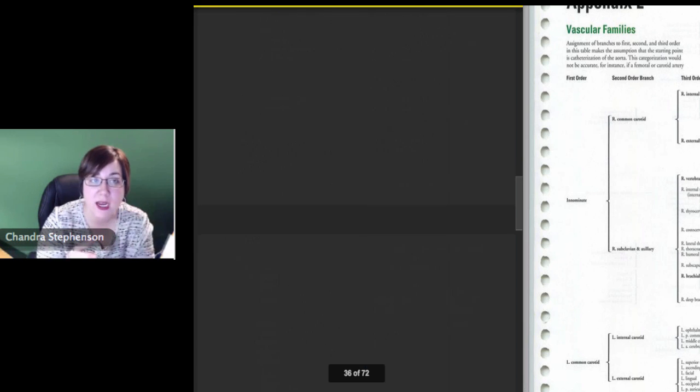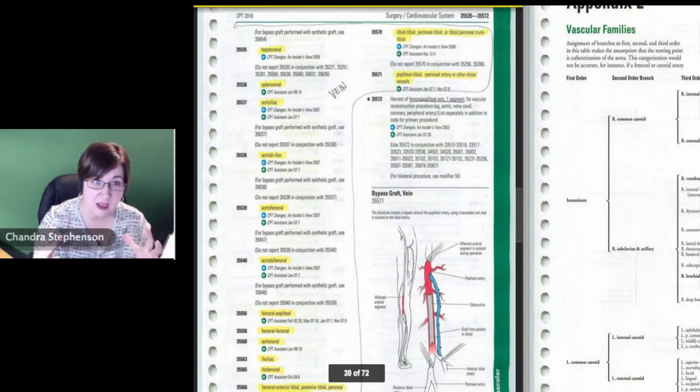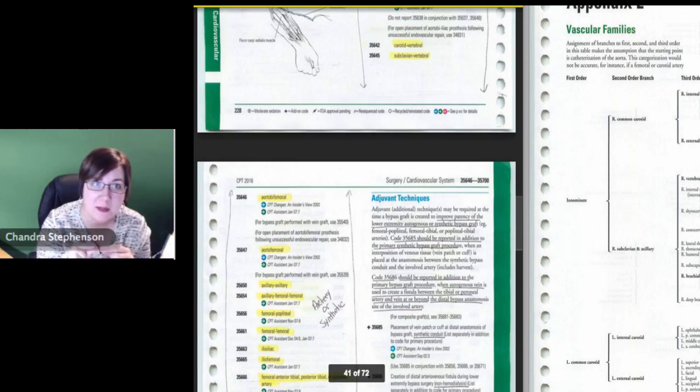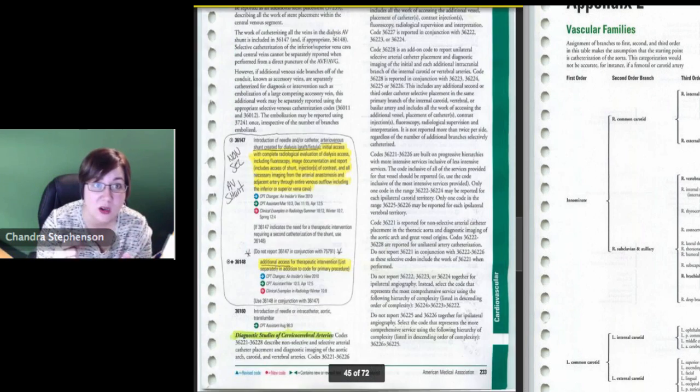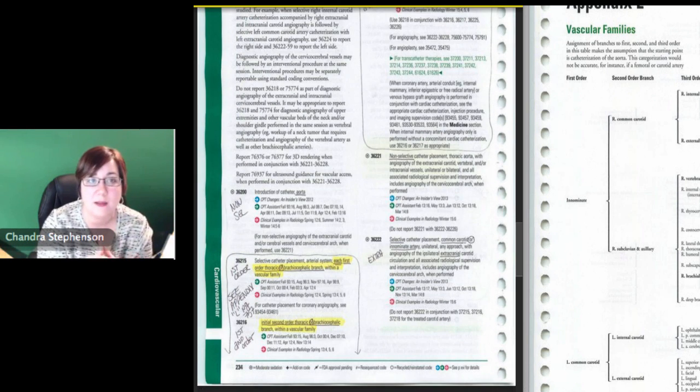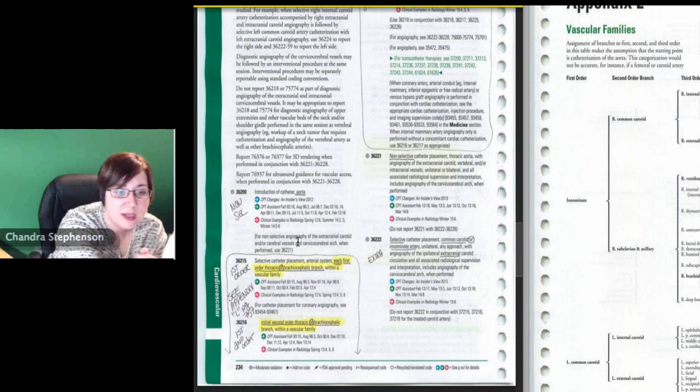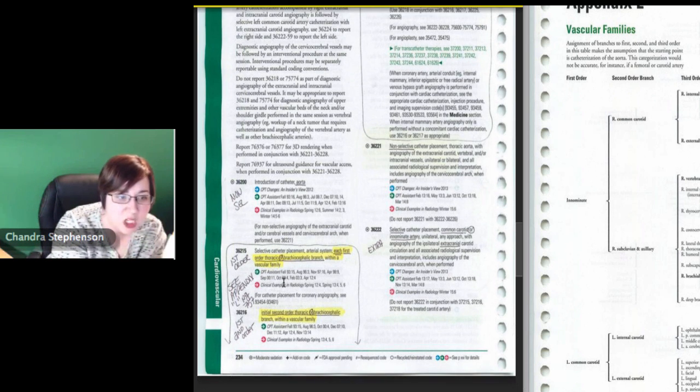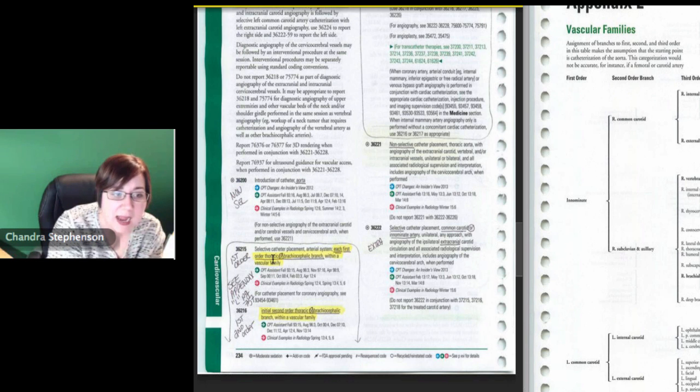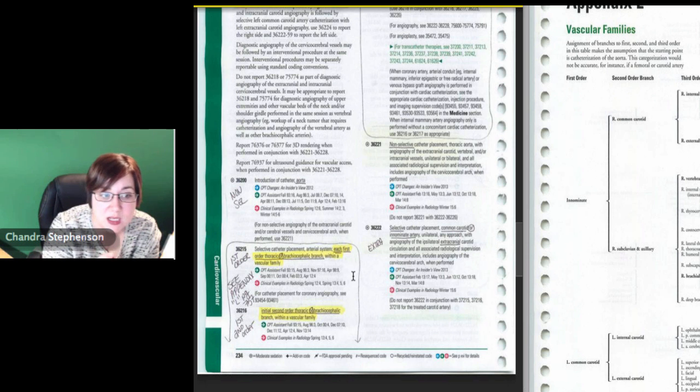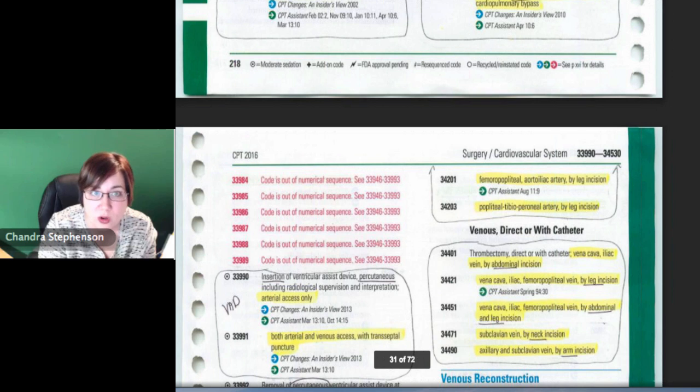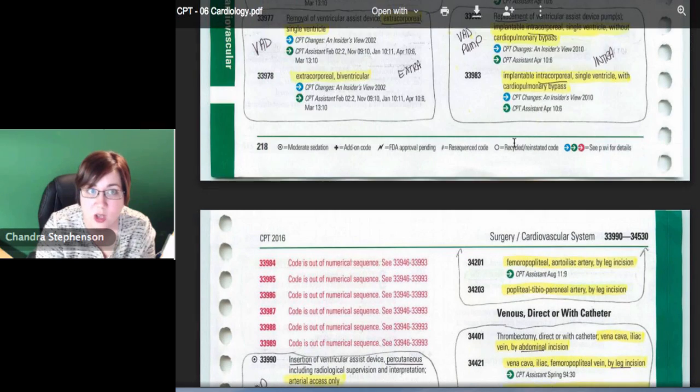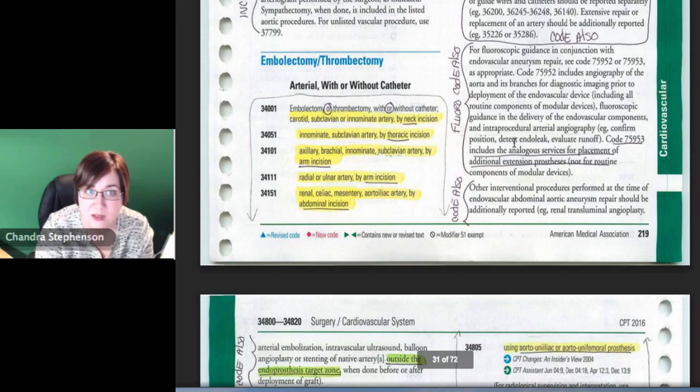Every time that they had to negotiate around one of those little turns - because my picture, it looks really big, those arteries are teeny tiny. I mean, some of them are the size of hair. Getting in there takes a lot of skill. So we're going to pay them every time that they had to do the work of getting into the right one and make sure I'm in there and adjust that. So that's why when you look at this, Laureen's got the page pulled up there. You'll see 36215 says each first order within a vascular family and then 36216 says the initial second order, 36217 says initial third order, and then the 36218 says each additional second or third or beyond.